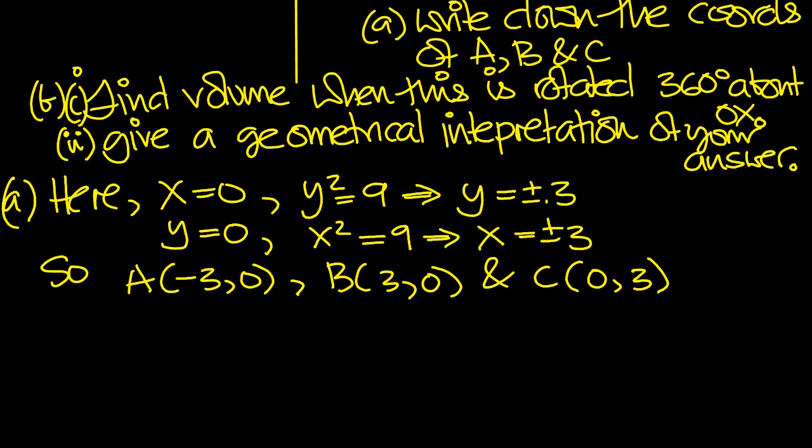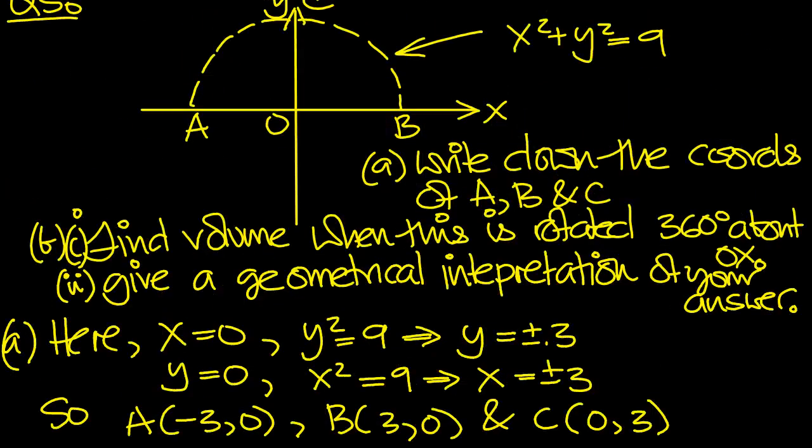So find the volume when this is rotated 360 degrees about the x-axis. So here's our circle. Now I'm going to try and draw a little disc here when we rotate it 360 degrees. So we get these slices of cylindrical volume. They're of thickness Δx. The radius is y.